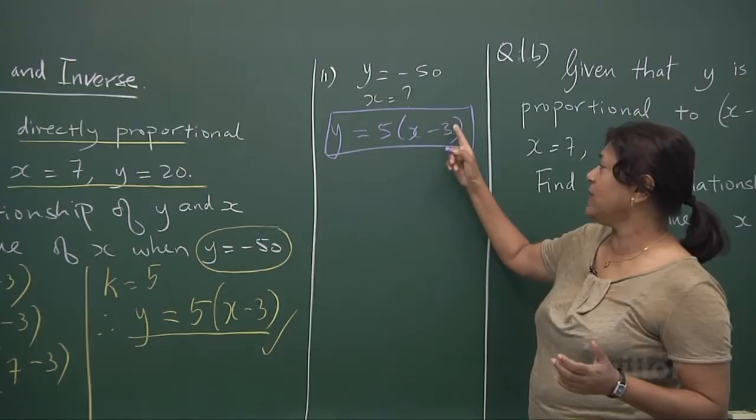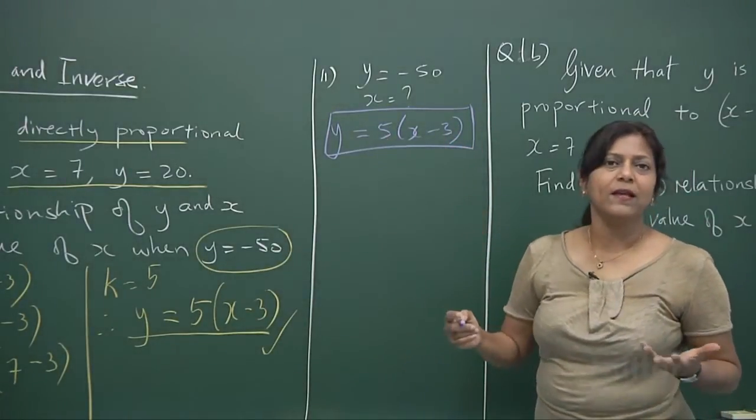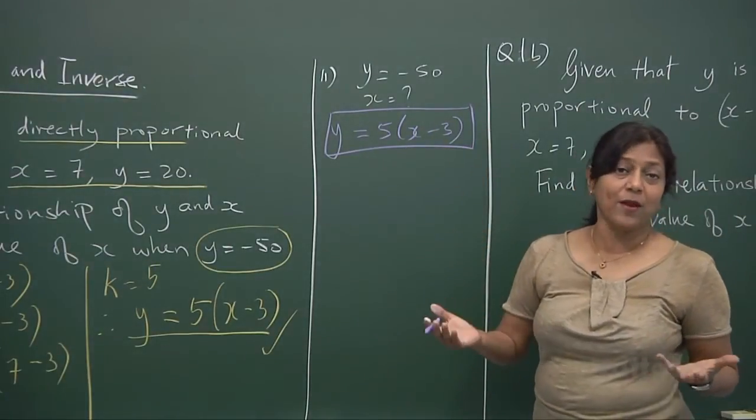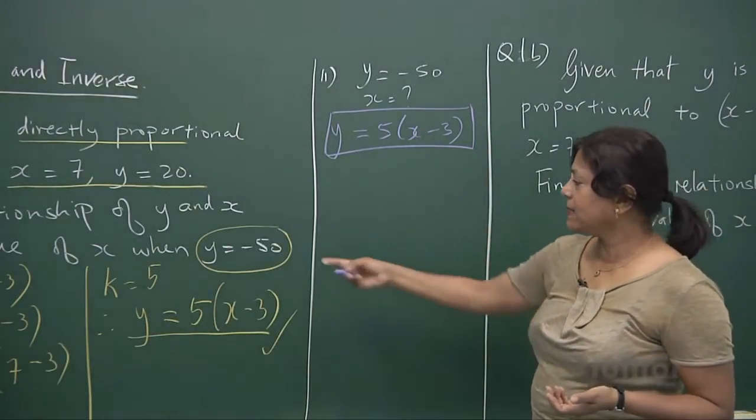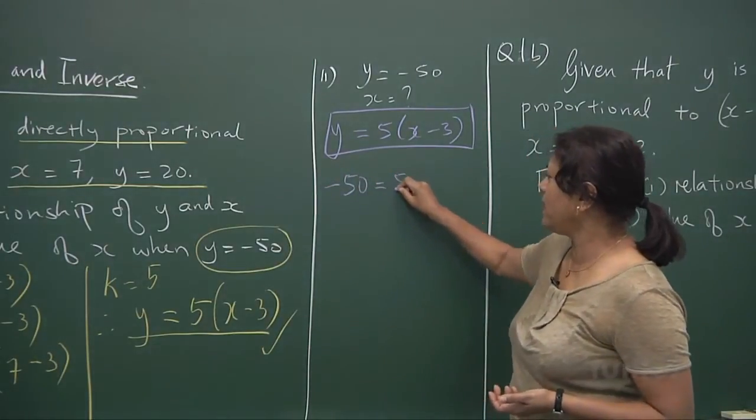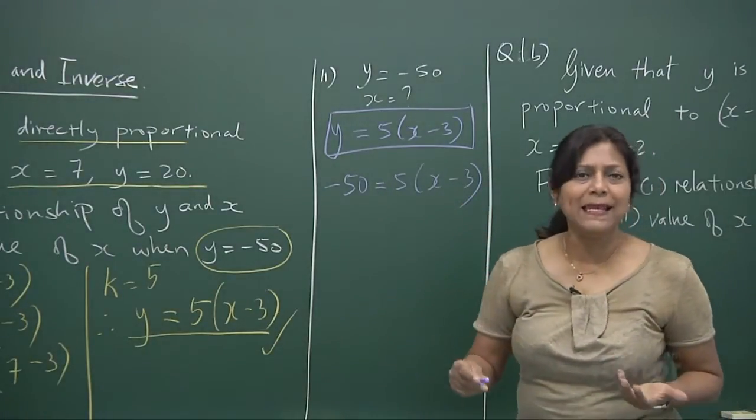If x is 20, 20 take away 3, you get a 17. 17 times 5, 85. If x is 100, you put it in and you find what is y. But in this case, they give us y as minus 50. So what is x? We need to find out. Simple linear equation.